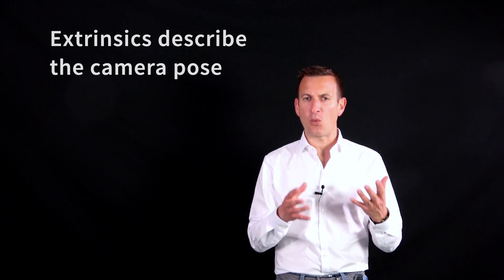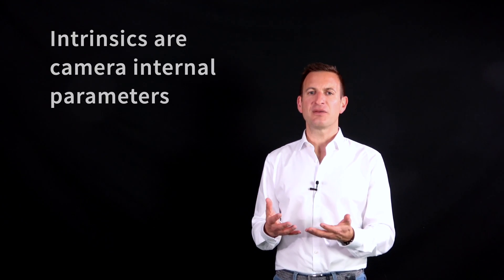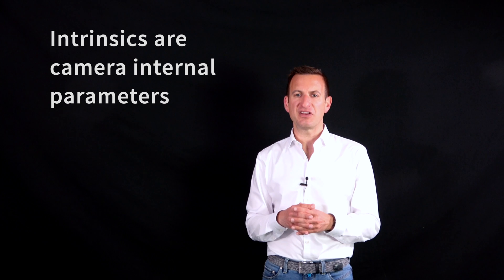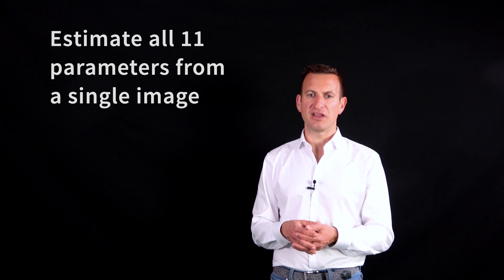What it basically means is we have the extrinsics which tell me where is your camera and where is it looking to, and we have the intrinsic parameters which are basically parameters sitting inside your camera. And you want to estimate those 11 parameters just based on a single image.